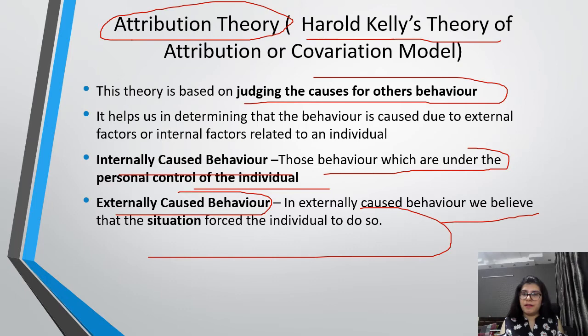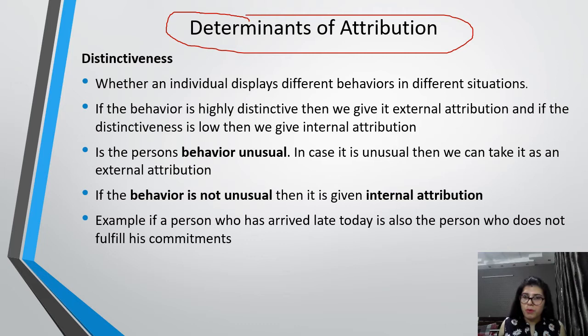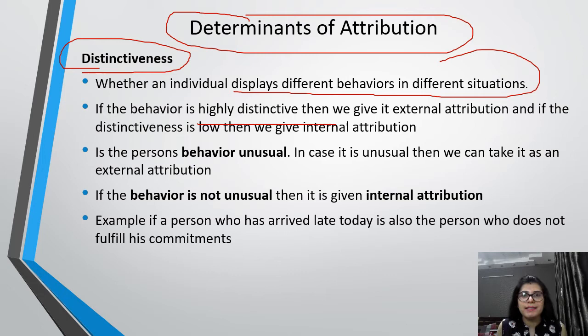Now we will see the determinants of attribution — what helps us determine whether behavior is internally or externally caused. The first determinant is distinctiveness: whether an individual displays different behavior in different situations. If the behavior is highly distinctive, we give it an external attribution. If the distinctiveness is low, we give it an internal attribution.